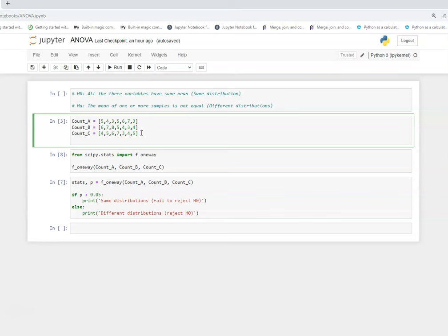Now the null hypothesis will be all the three variables have same mean, in other words same distribution. And the alternative hypothesis says the mean of one or more samples is not equal or having different distribution.